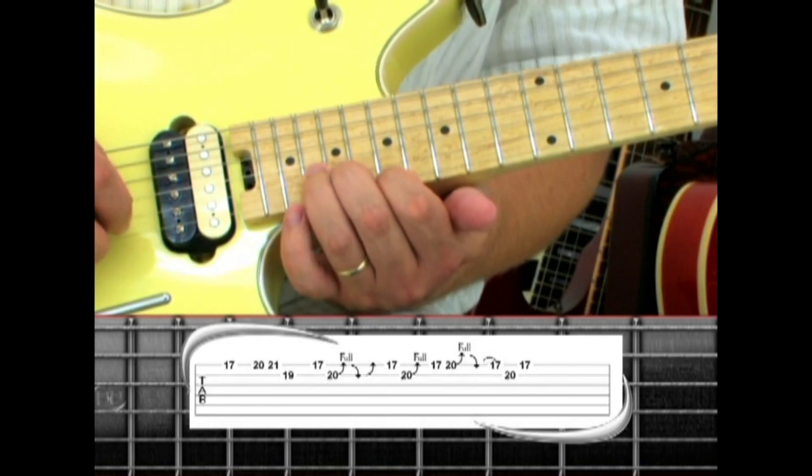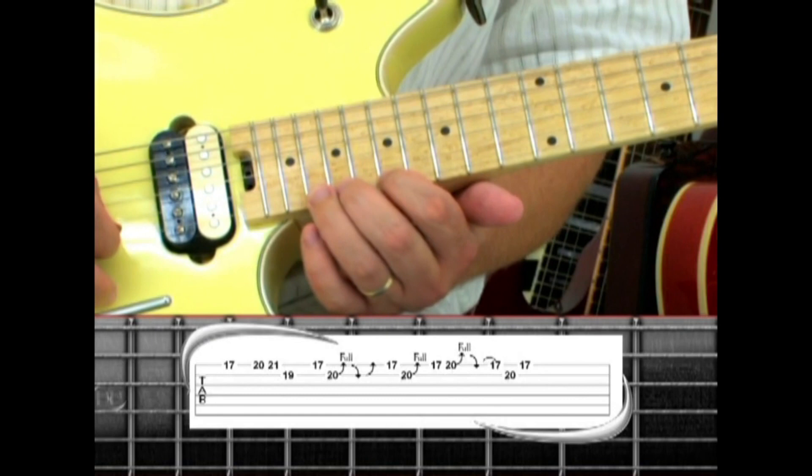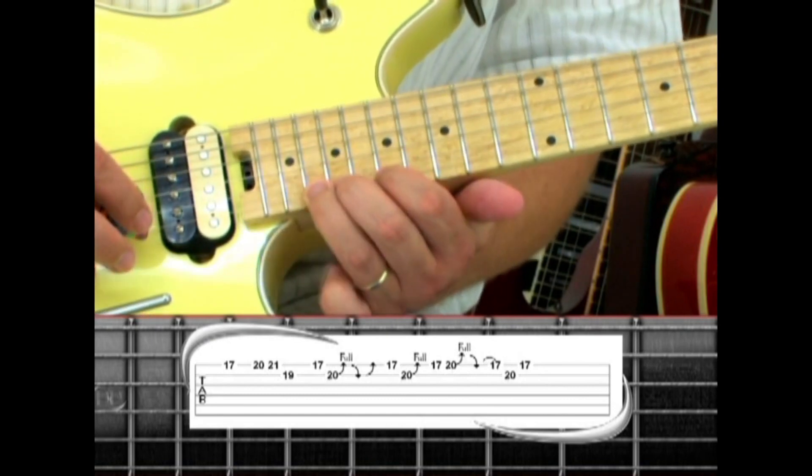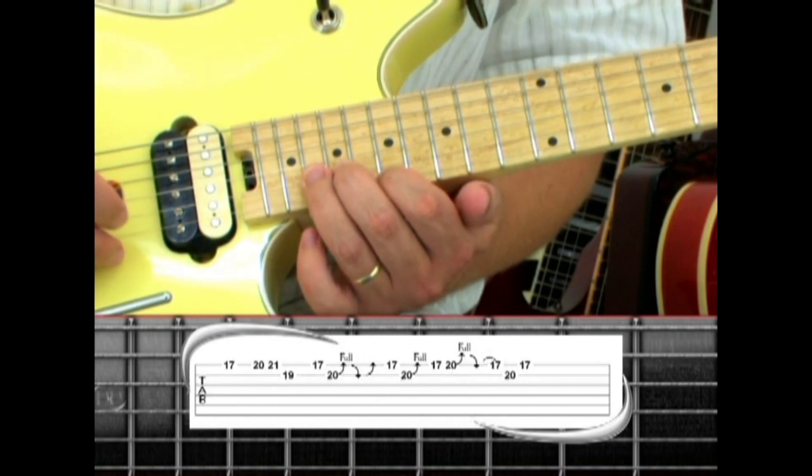Back to second string 20, bend, to first string 17, 20, bend, release, and pull to 17. Second string 20, back to first string 17.